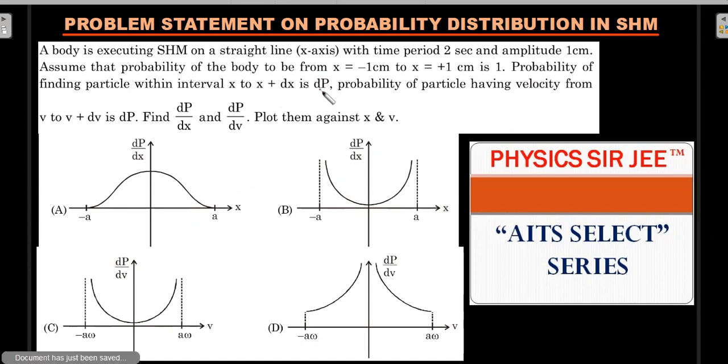But probability of finding the particle within a small region, that is a dx region, is defined as dp. The probability of particle having a speed from v to v plus dv is again dp. Then you have to find the distribution functions of dp/dx and dp/dv and plot them against x and v respectively. So the first two options, if you carefully observe, is the probability distribution over space versus space, and the second one is probability distribution over the speed function versus the speed function.